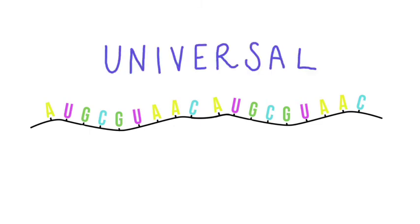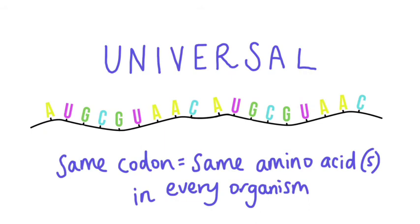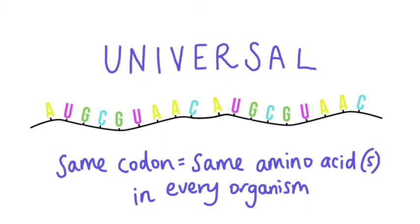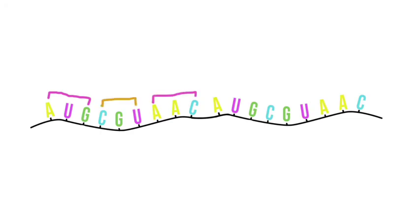The code is universal — the same codon codes for the same amino acid in every organism. The code does not overlap; each base is only read once.